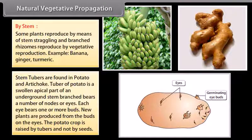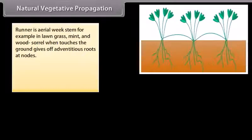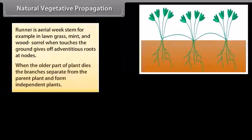By stem: potato tubers have nodes or eyes, each eye bearing one or more buds. New plants are produced from the buds on the eyes, so the potato crop is raised by tubers and not by seeds. A runner is an aerial weak stem — for example in lawn grass, mint, and wood sorrel — which when it touches the ground gives off adventitious roots at nodes. When the older part of the plant dies, the branches separate from the parent plant and form independent plants.